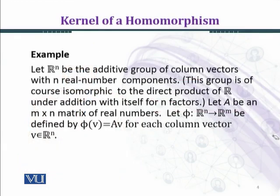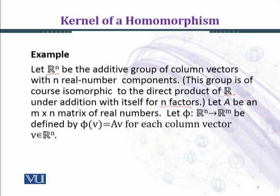Let R^n be the additive group of column vectors with n real components. This group is of course isomorphic to the direct product of n copies of the group R under addition with itself for n factors. So R^n is isomorphic to R cross R and so on, n times. Let A be an m by n matrix of real numbers with entries in the set of real numbers.